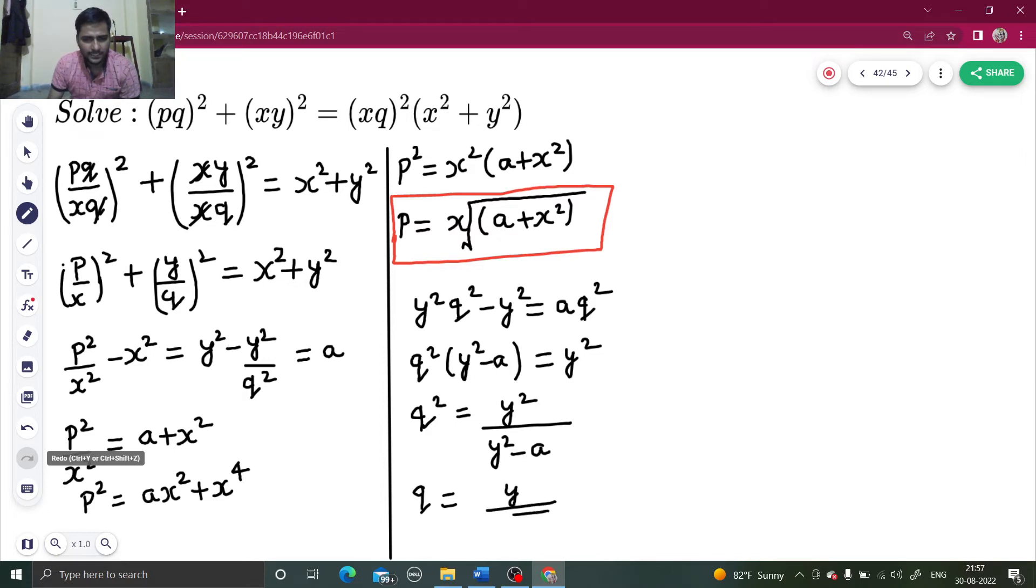So Q squared is Y squared divided by Y squared minus A. If I want to find Q, plus minus will be there but I am taking only plus, so Y divided by the square root of Y squared minus A. So I got the value of Q as well.